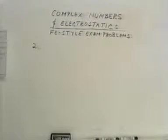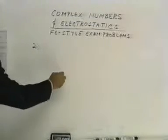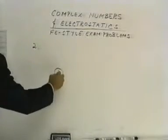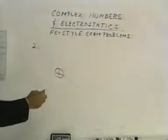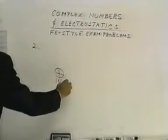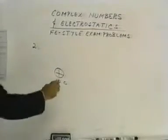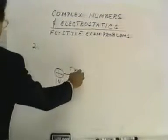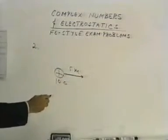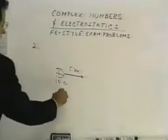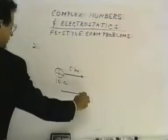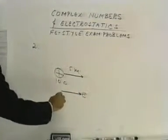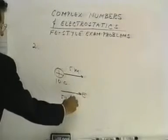Problem number two, what is the work required to move a positive charge, which has a 10 coulomb charge in it, a distance of 5 meters in the same direction as a uniform field. So there's an E field in this direction, and the field is 50 volts per meter.